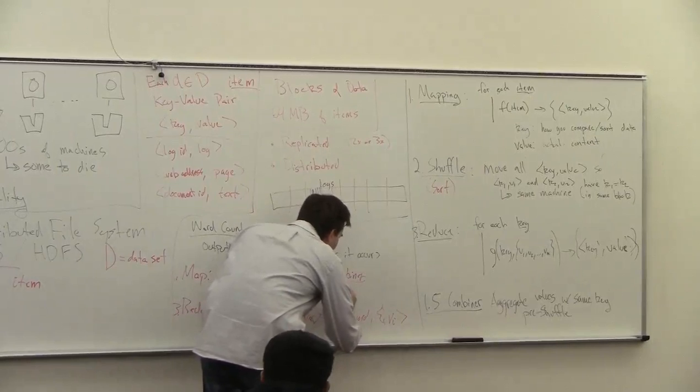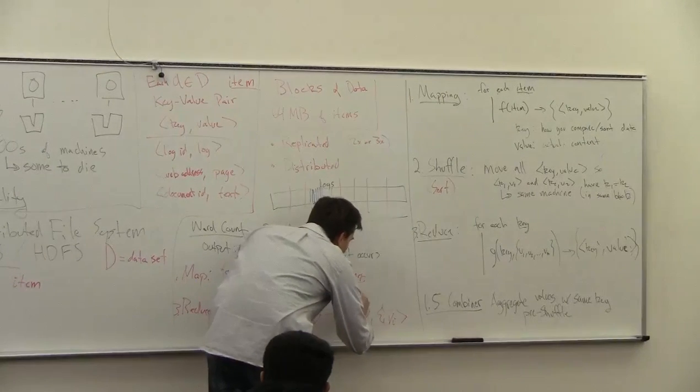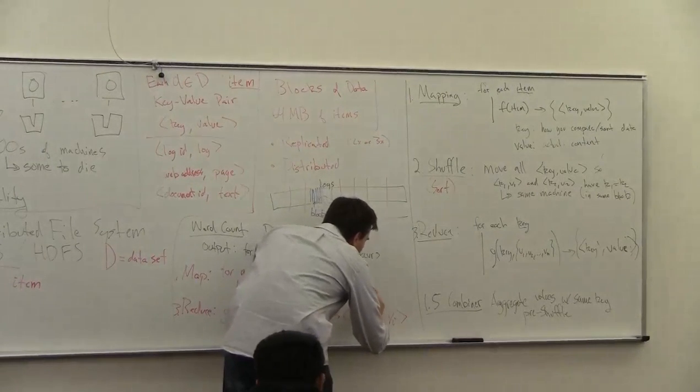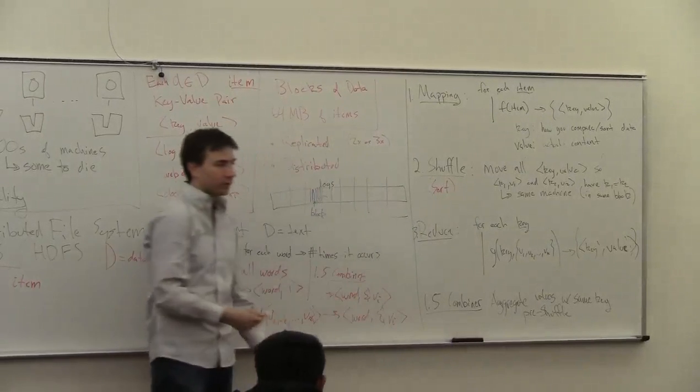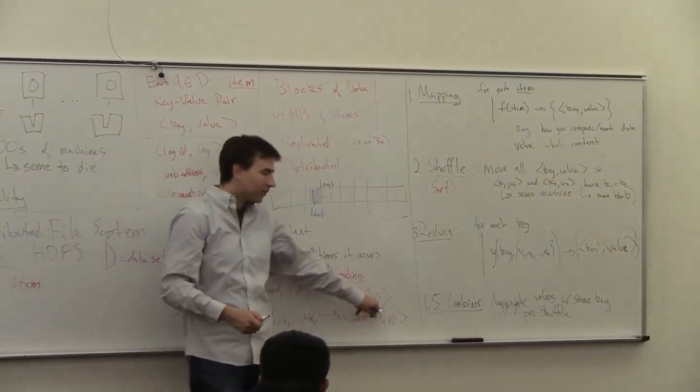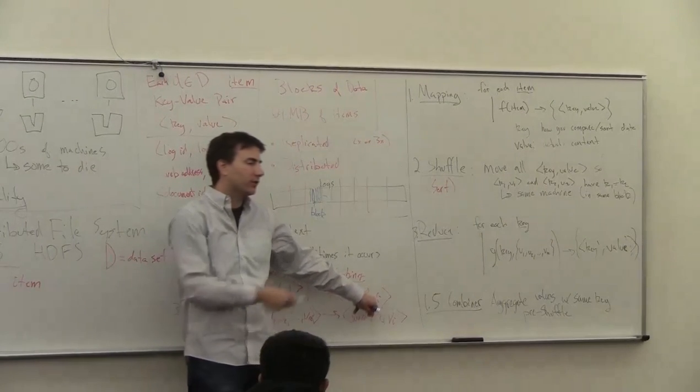So again, it's going to output one key value pair with word and the sum of all of these values. So if it occurred 10 times, then the value here is 10. If it occurred twice, the value here is 2.